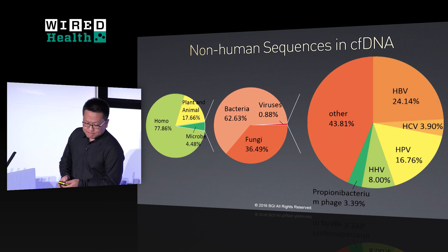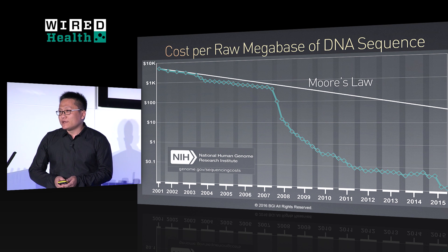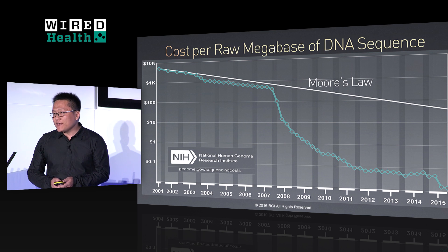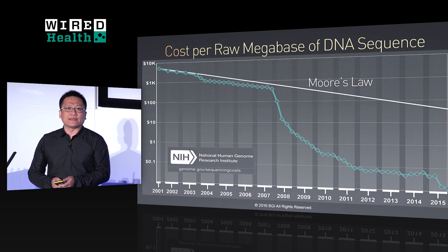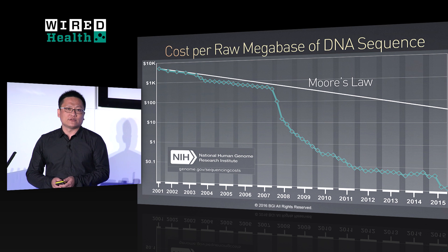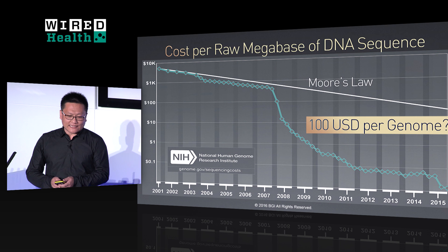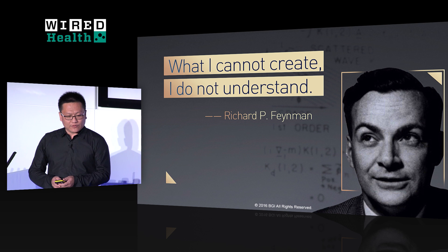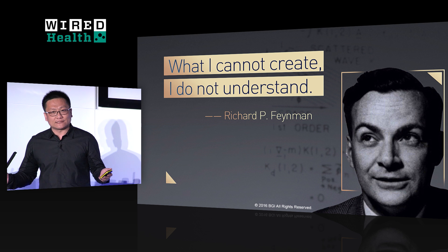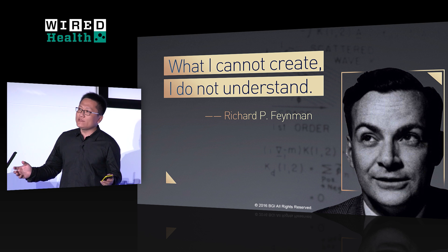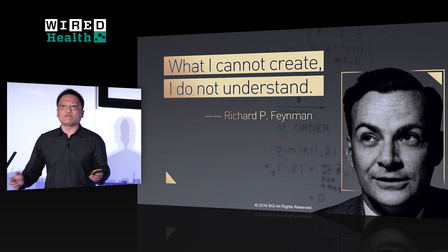For the first human genome, we spent 13 years and 3 billion US dollars. Today, the cost is lower than 1,000 US dollars per genome. Within three years, I believe the cost will be less than 100 US dollars, or even free. But sequencing alone is not enough. Just like Nobel Prize winner Richard Feynman said: what I cannot create, I don't understand. We need to read genes, but we also need to write and even modify genes.